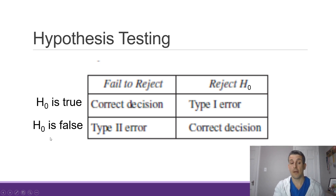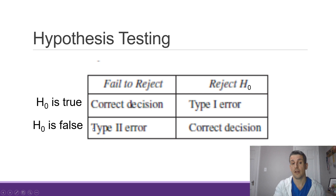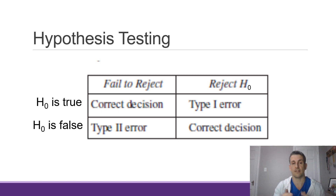Now, if the null hypothesis is actually false and we reject the null hypothesis, that is the correct decision. But if the null hypothesis is false and we fail to reject the null hypothesis, therefore accepting the null hypothesis, we create a type 2 error. So, type 1 error and type 2 error are just two ways to make errors in hypothesis testing.